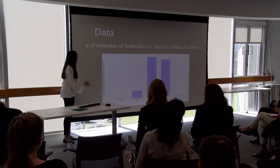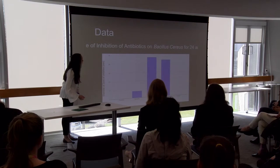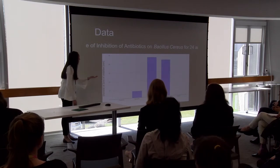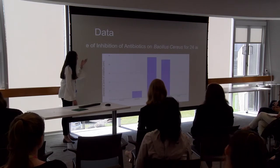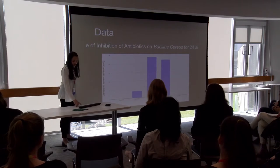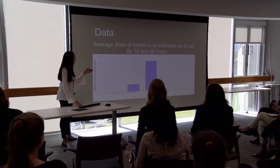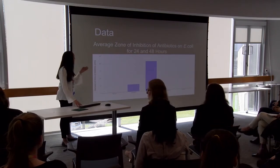Here's a visual graph — it got a little cut off at the top — but it clearly shows that neomycin and erythromycin worked better on Bacillus cereus, and that neomycin worked well on the E. coli.